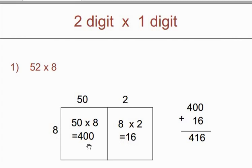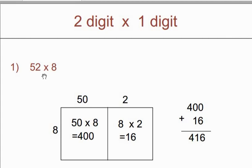Now we have to make a sum of 400 plus 16. So by doing summation of 400 plus 16 we will get answer 416. So that will be the answer of 52 multiply by 8.